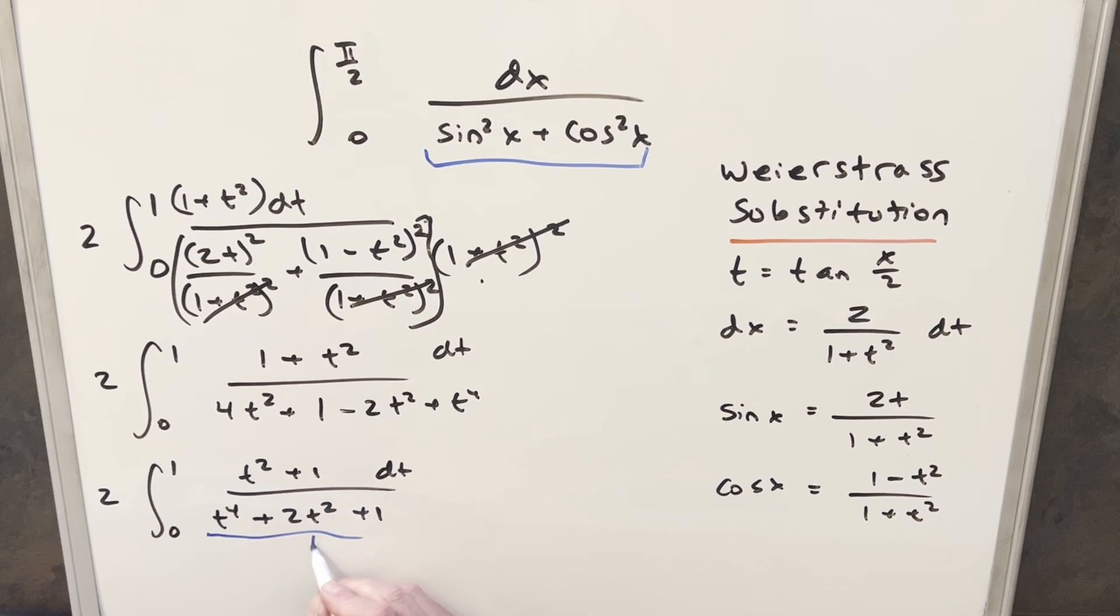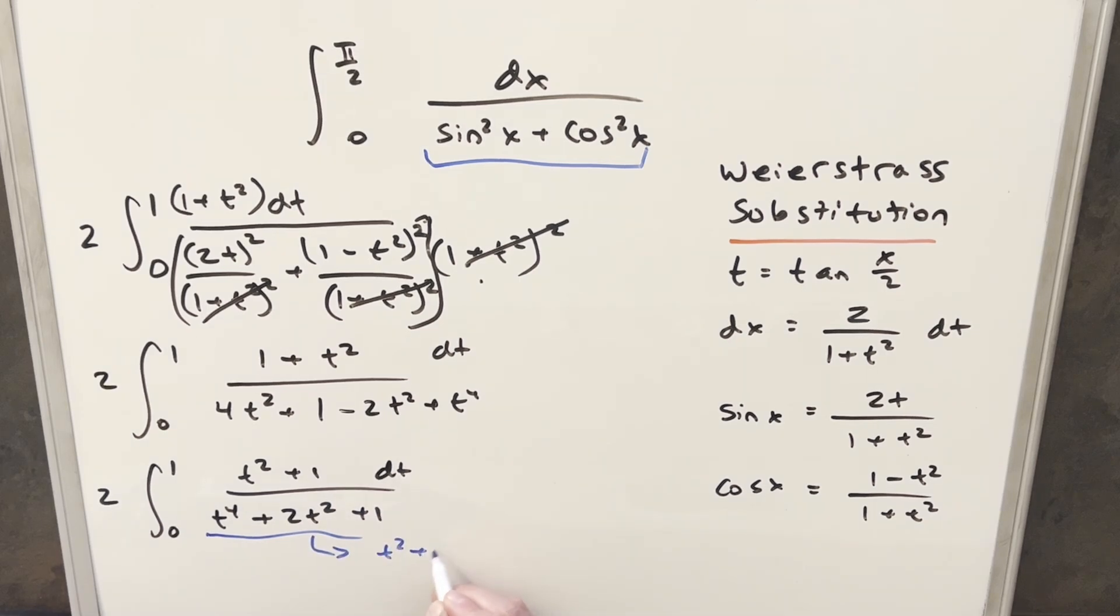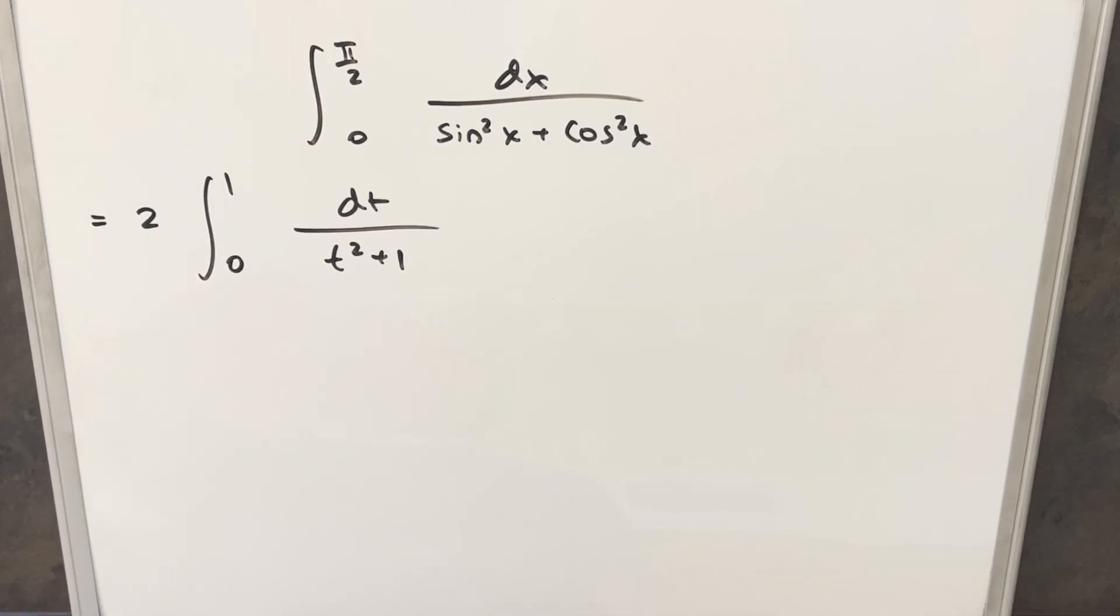But then this whole thing here, this can actually be factored as t² plus 1 squared. But then I can just cancel all this with one of these. Let me just rewrite it and we'll finish it off. But now that we have this all cleaned up, we just have an easy integral here. This thing is much simpler than what we started with. So now we can just finish it off.